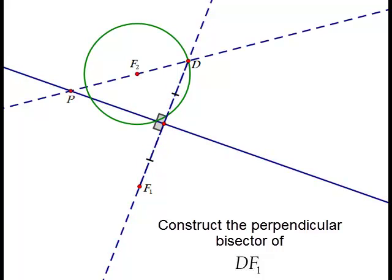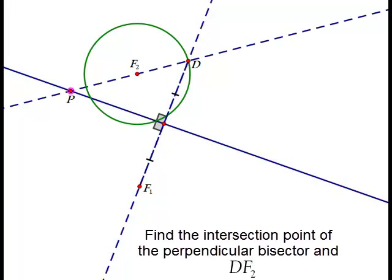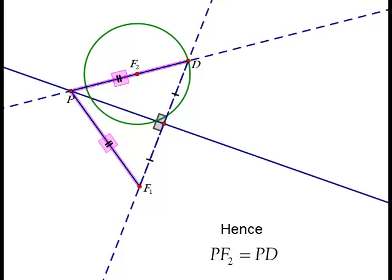The place where the perpendicular bisector intersects D to F2, we're going to label that point P. From our understanding of geometry, we hopefully remember that any point along the perpendicular bisector will be equidistant to the endpoints of the segments. Therefore, P to F1 is the same value as P to D.